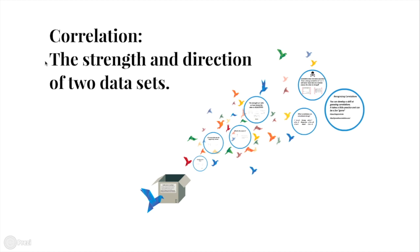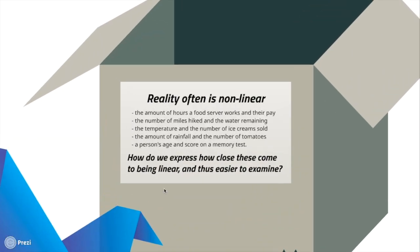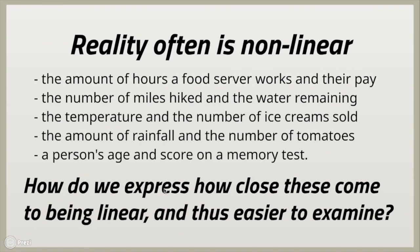The stronger the relationship, the closer the x and y variables end up creating a straight line. In reality we often find situations that are not linear. Here are five examples of situations that involve nonlinear data. A very simple example is a food server working at a restaurant — the amount of hours they're working and the pay they receive. Because they get tips, sometimes good and sometimes bad, the amount of money they make is not at a set pay scale. That's an example of a positive relationship: as the number of hours increases, the amount of pay generally increases as well.